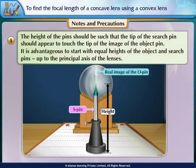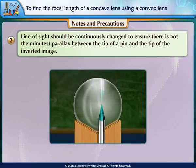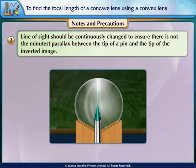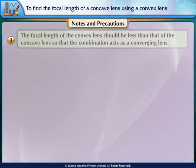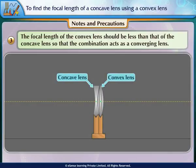Notes and Precautions: 1. The height of the pins should be such that the tip of the search pin appears to touch the tip of the image of the object pin. It is advantageous to start with equal heights of the object and search pins up to the principal axis of the lenses. 2. The line of sight should be continuously changed to ensure there is not the minutest parallax between the tip of a pin and the tip of the inverted image. 3. The focal length of the convex lens should be less than that of the concave lens so that the combination acts as a converging lens.